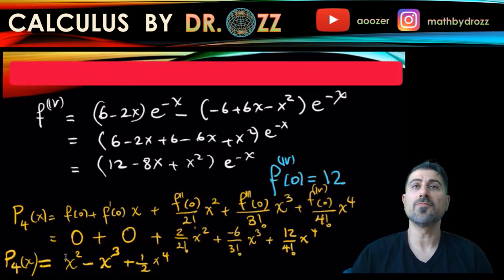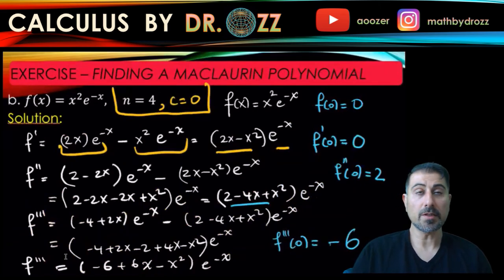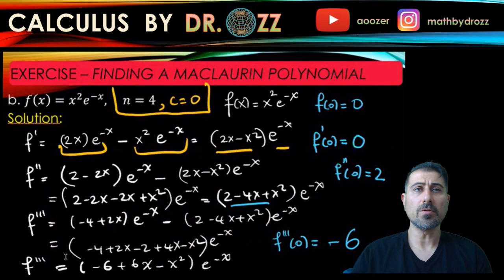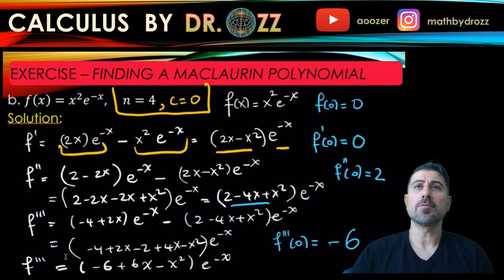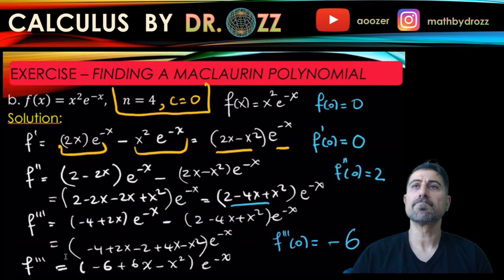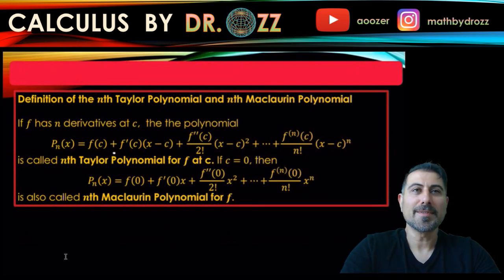This can be tedious because you have to calculate all the derivatives, sometimes using the product rule, quotient rule, and all the rules learned in Calc 1 — all applicable toward calculating Maclaurin or Taylor series. That's the end of the video. Thanks for watching — see you in another video!